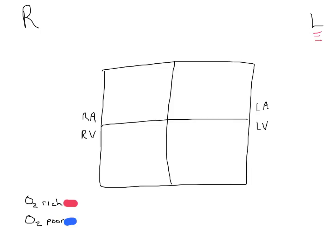Remember: atrium, ventricle, out. Blood is going to enter the left atrium through vessels called the pulmonary veins. Veins always travel toward the heart. The pulmonary vein, by the way, is the only vein in the body that is actually oxygen-rich.